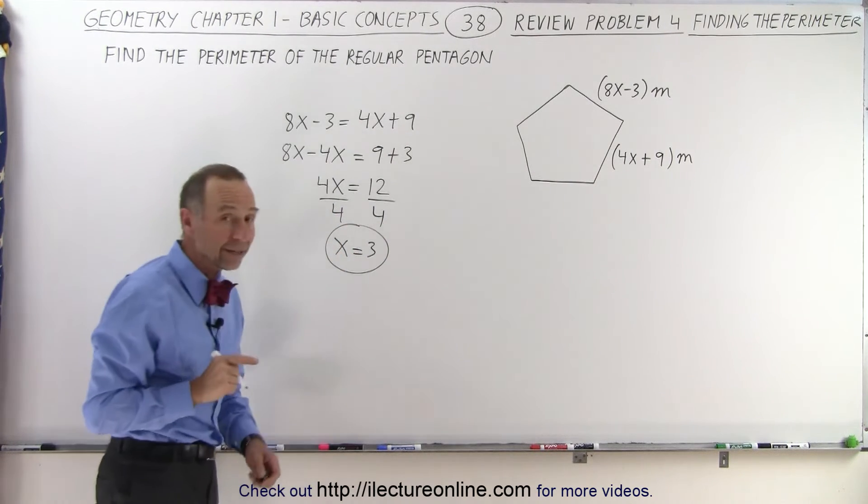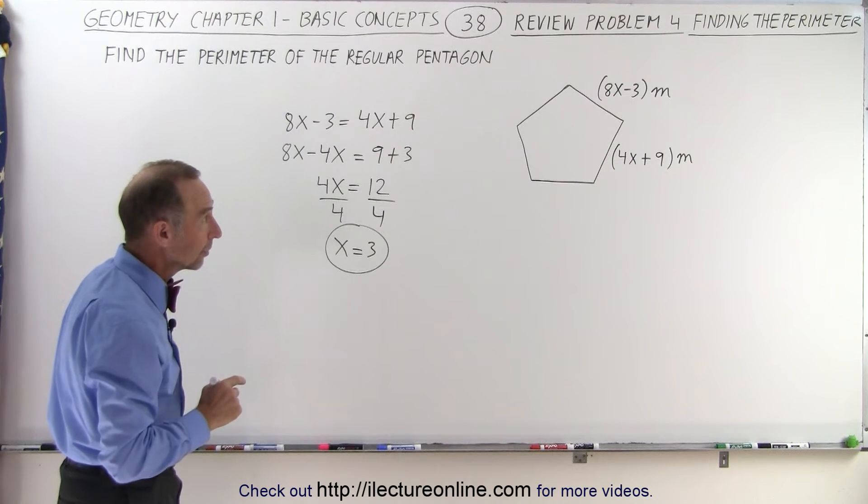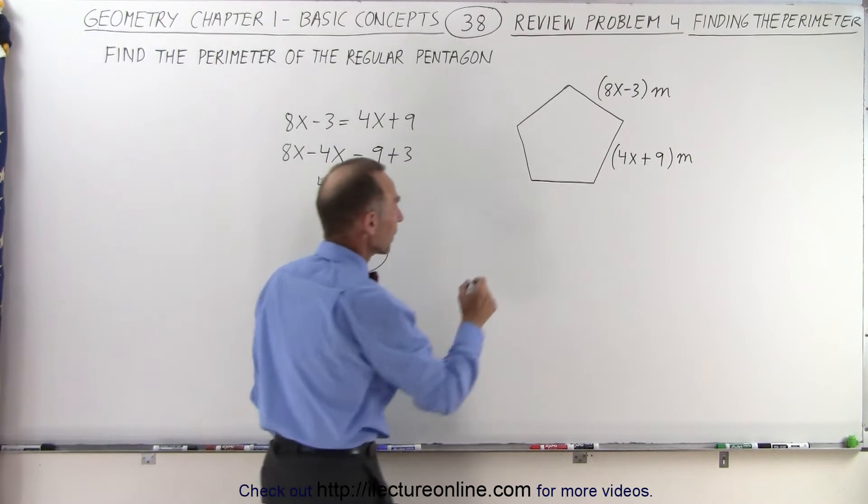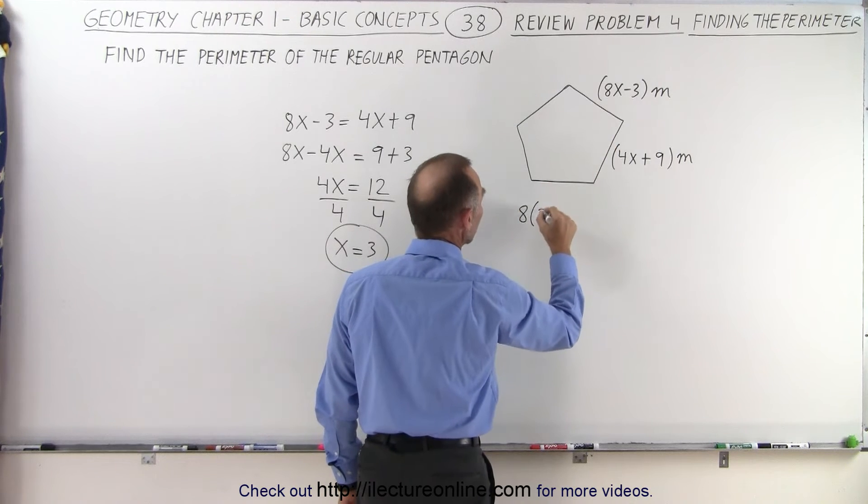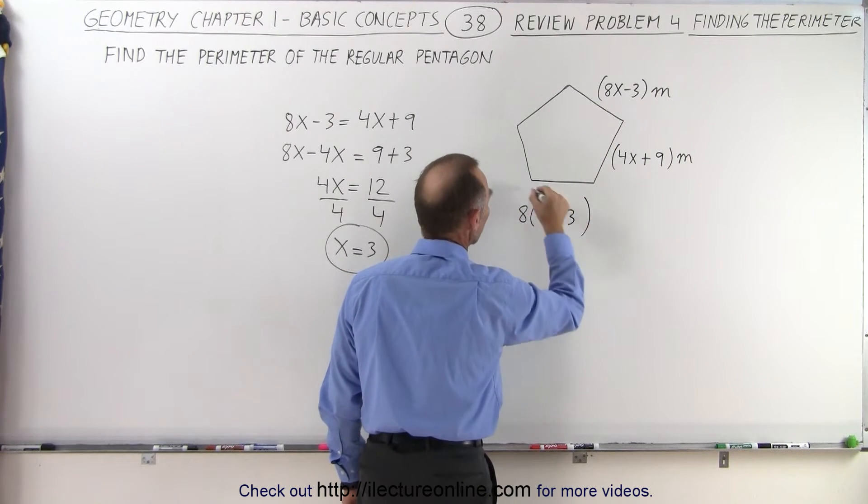Now that x equals 3, we can calculate the length of each side. We have 8 times 3 minus 3 meters.